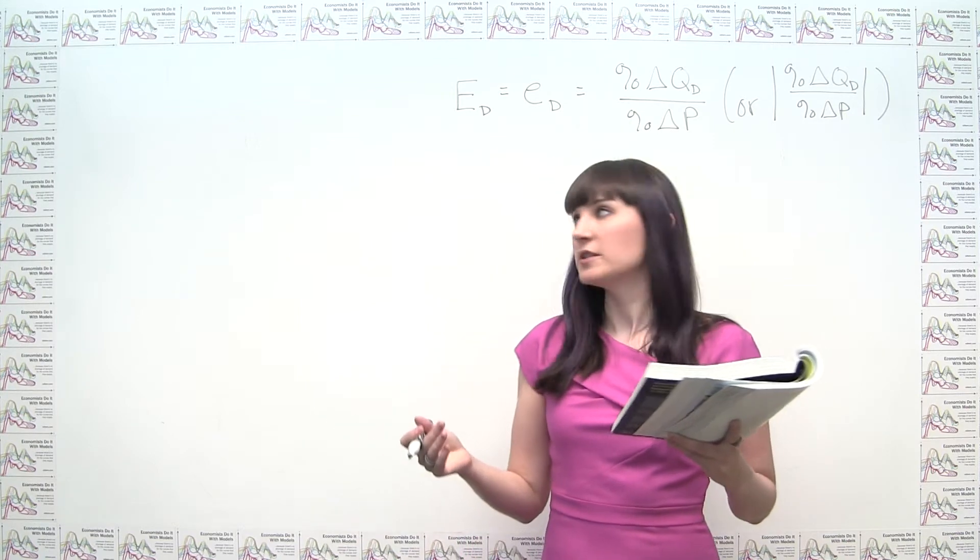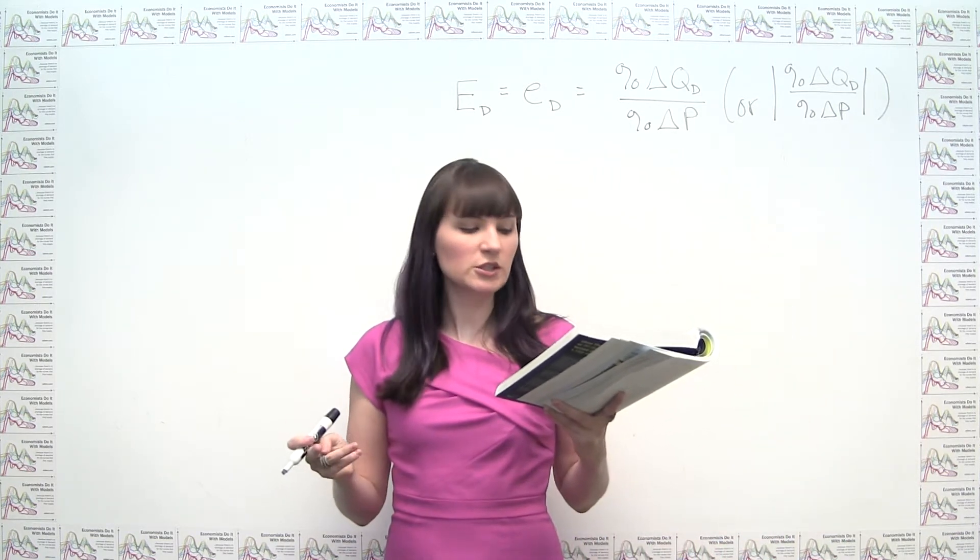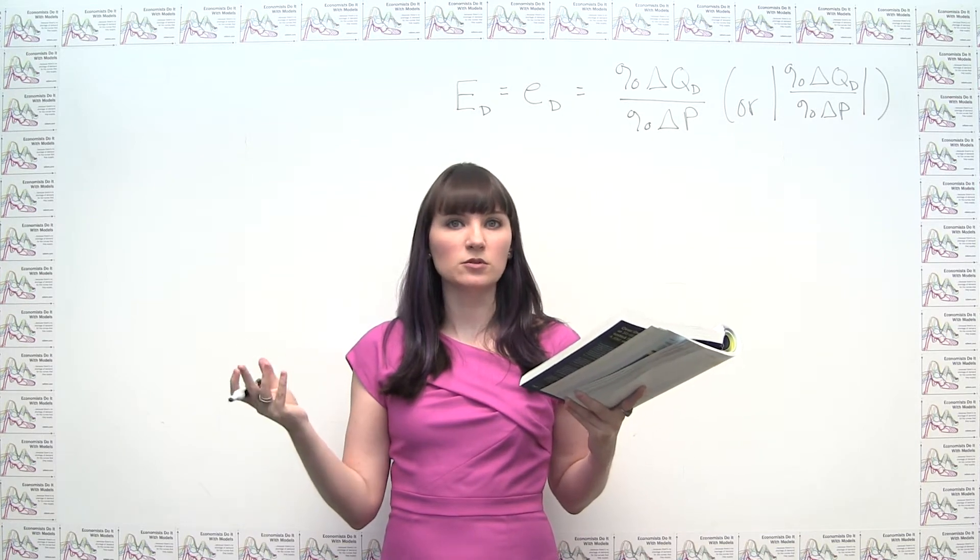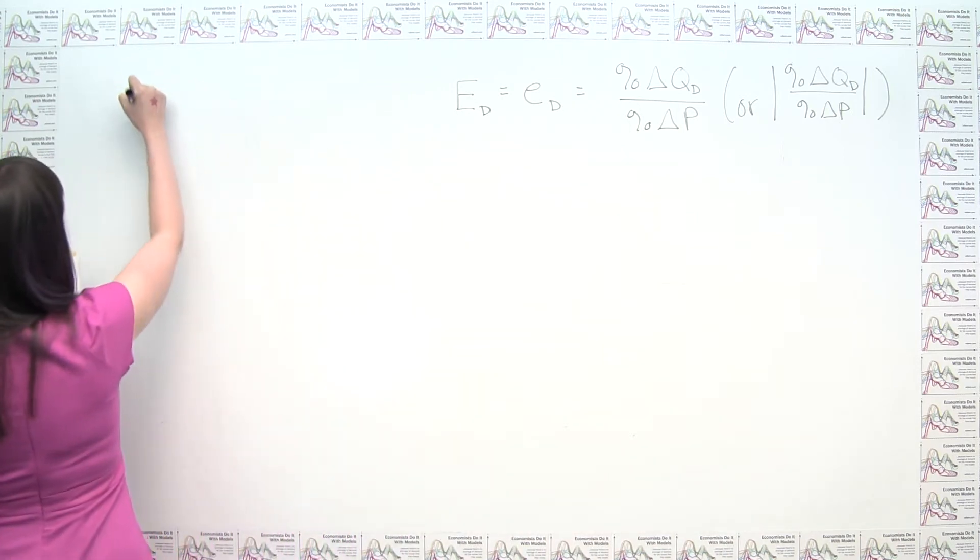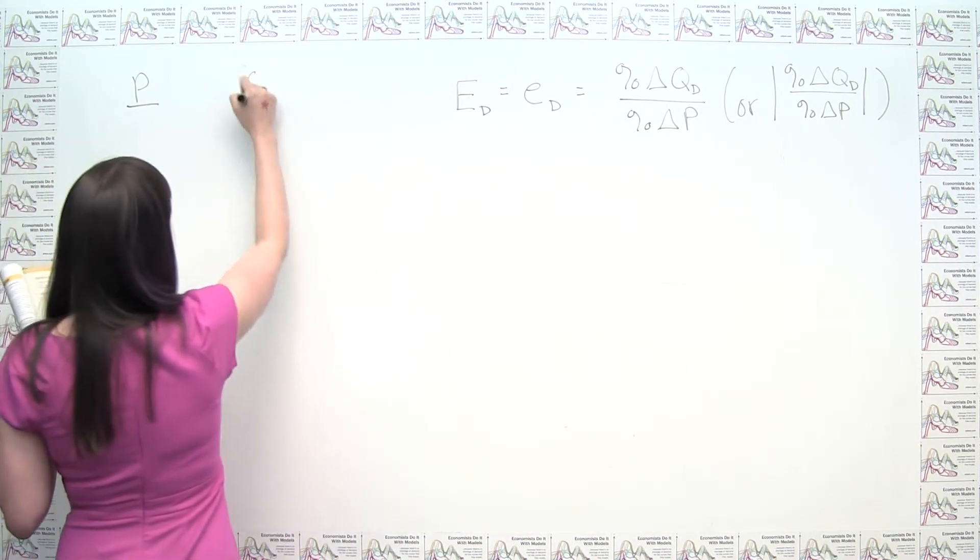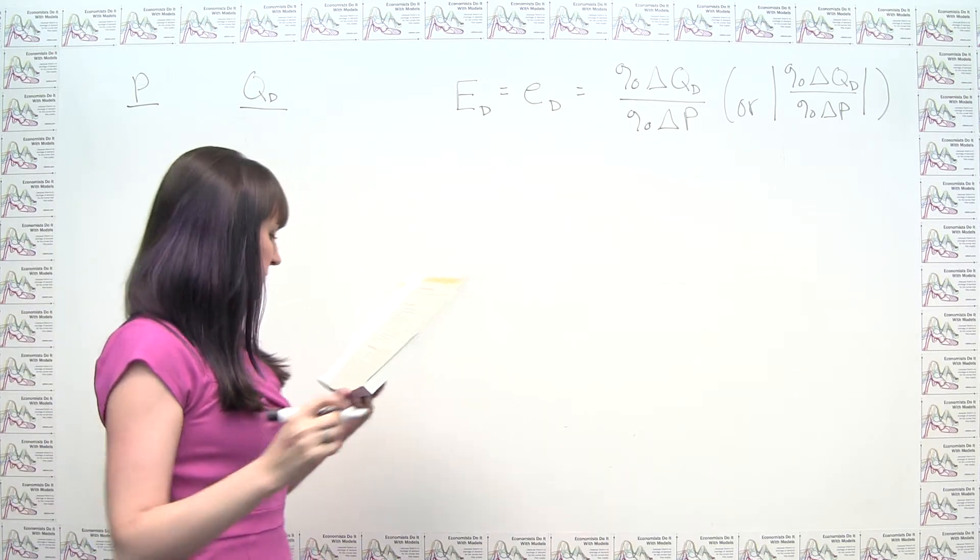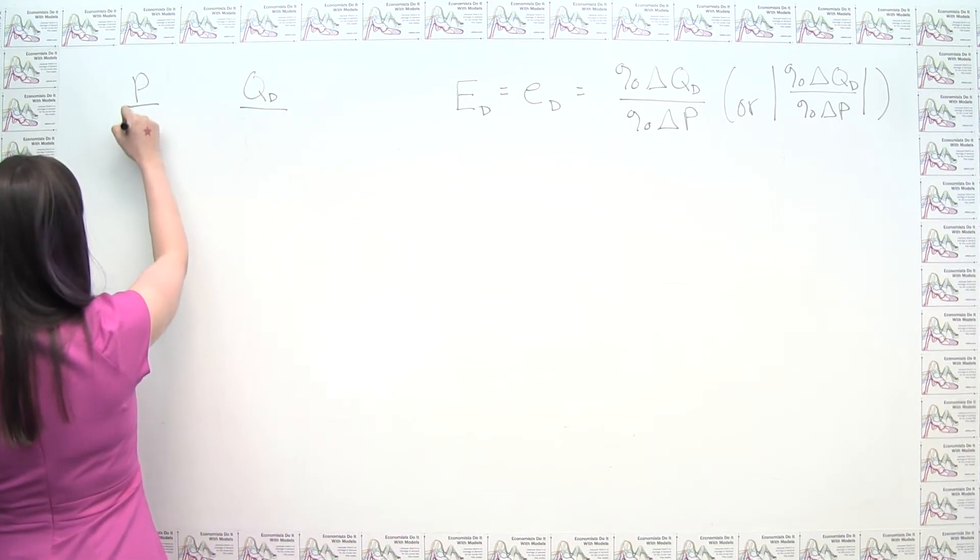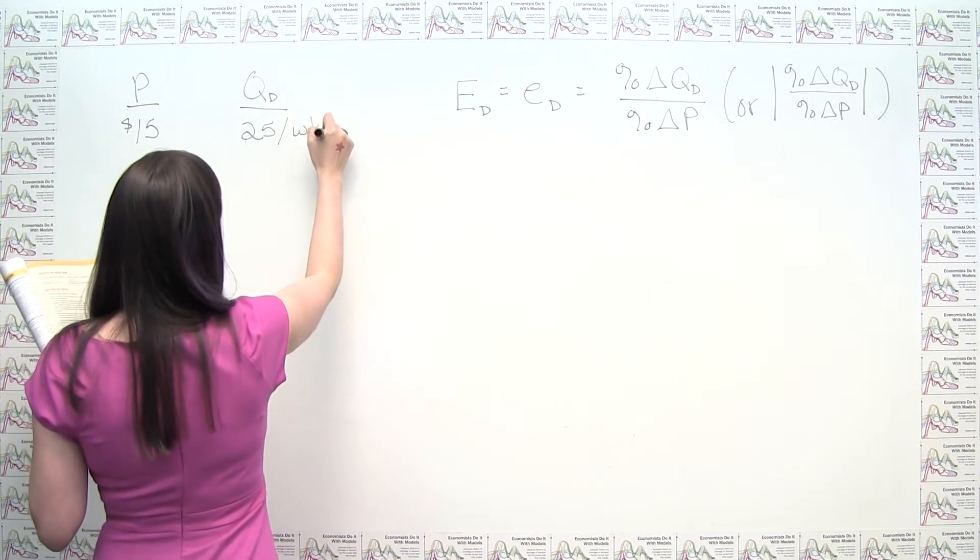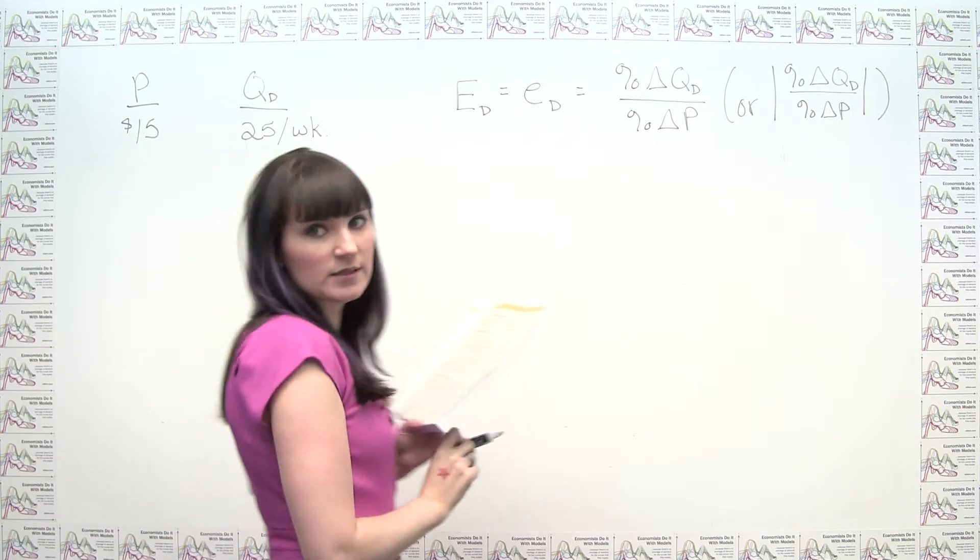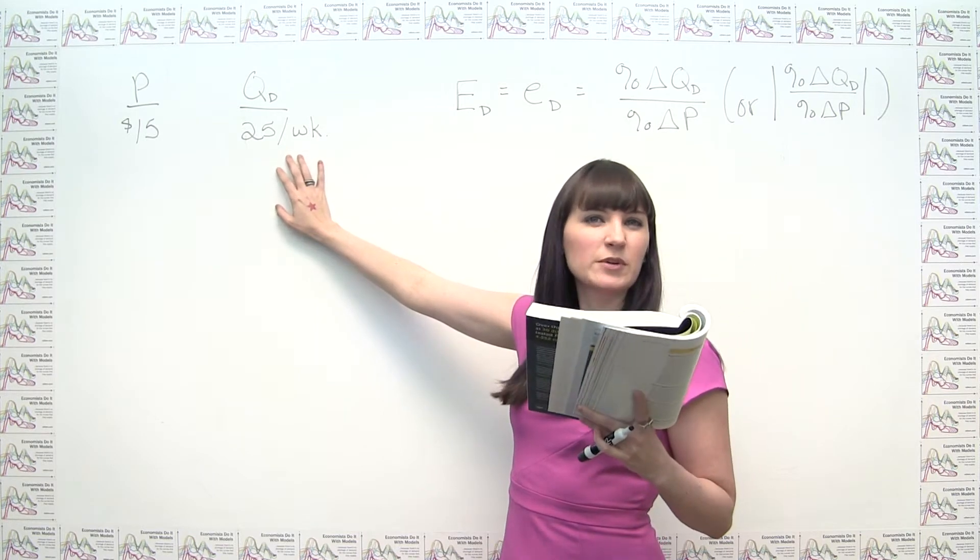So let's organize our information here, because what we need in order to calculate percent changes is the old and new price and the old and new quantity. So if I'm going to look at price and quantity demanded, it says here, at $15, we sell 25 per week.